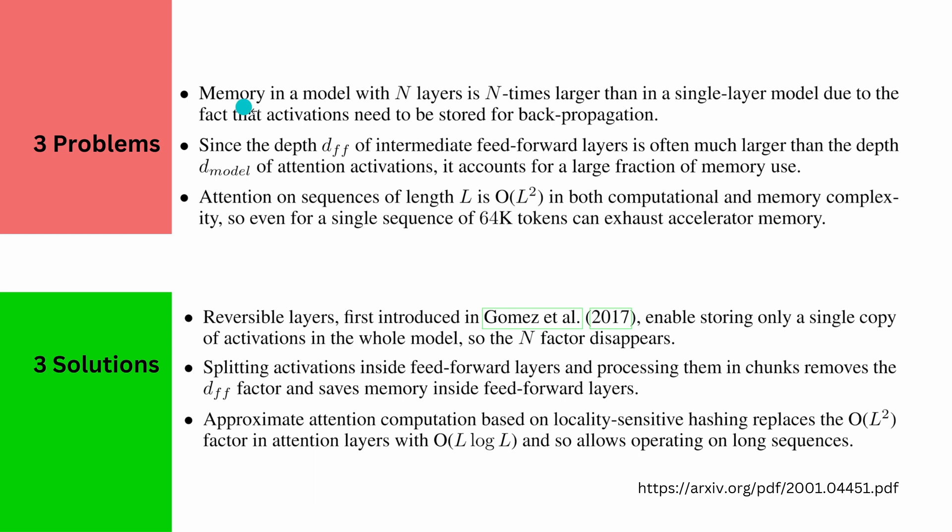Three problems: First, the memory in a model with N number of layers—10 layers, 24 layers, whatever number of layers you have—is N times larger than a single-layer model due to the fact that all the activations need to be stored for backpropagation. Remember backpropagation neural network? Yes, there was something. Second—and this is the least important point but it is important of course—since now the depth of the feedforward network in intermediate feedforward layers is often much larger than the depth of the attention activation, it accounts for a large fraction of memory use. And yes, you're not going to believe it, but we can simply split there.